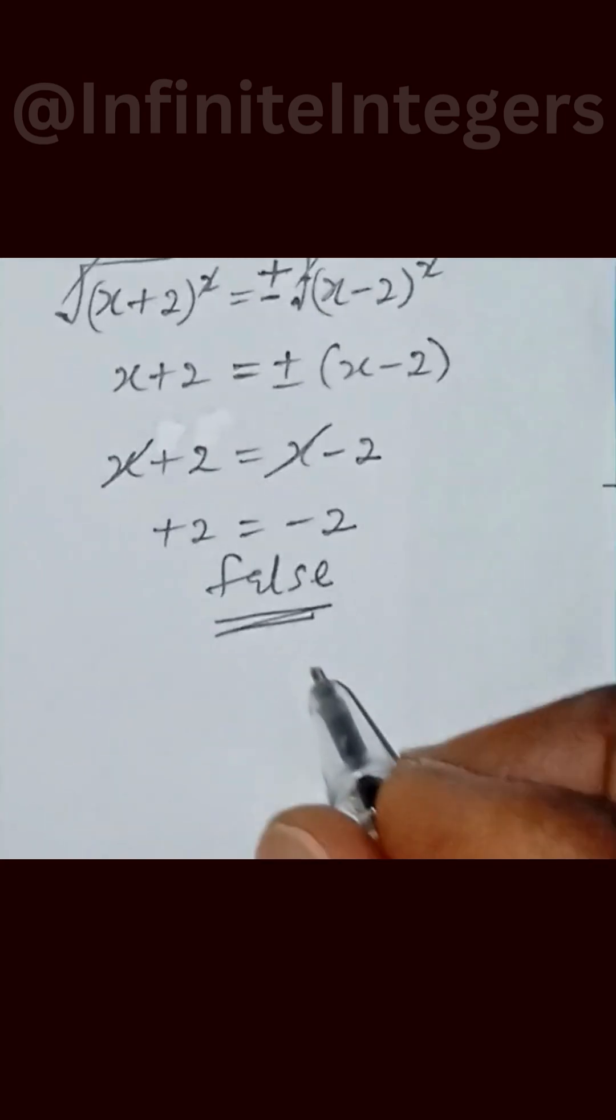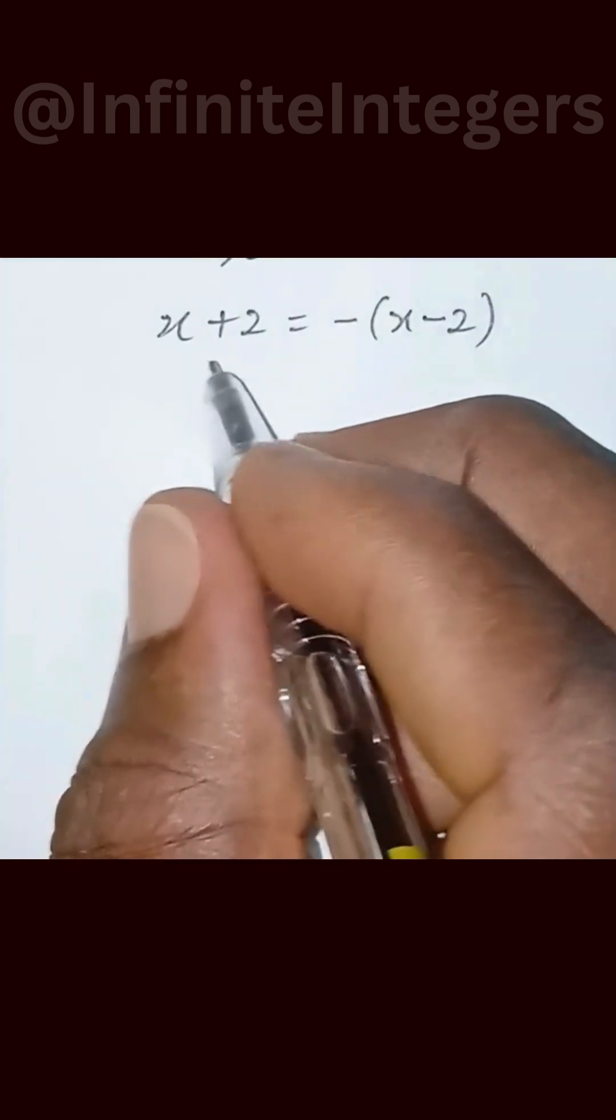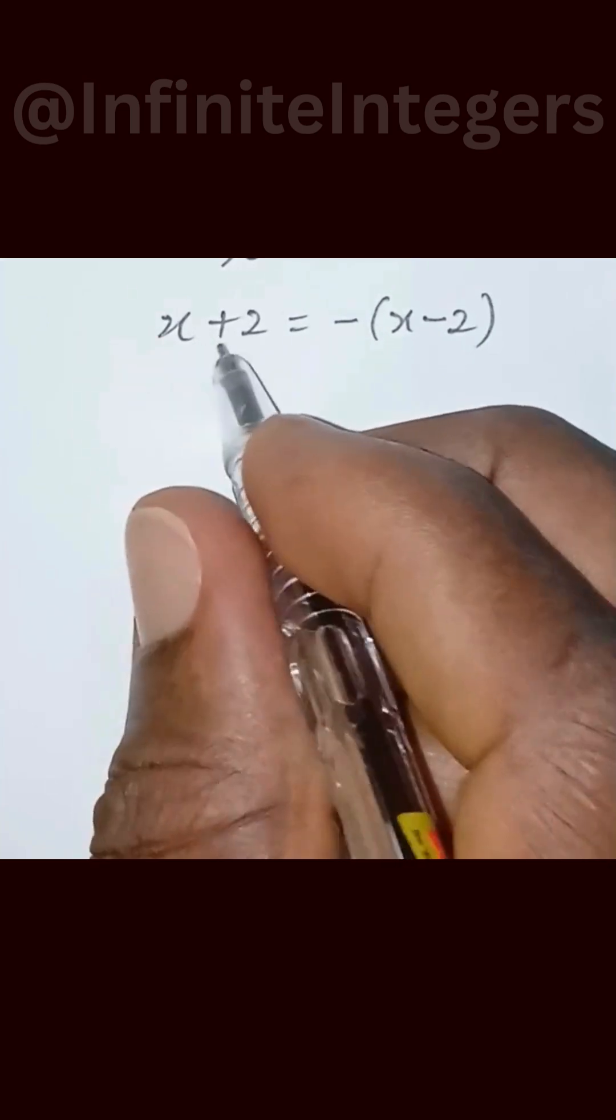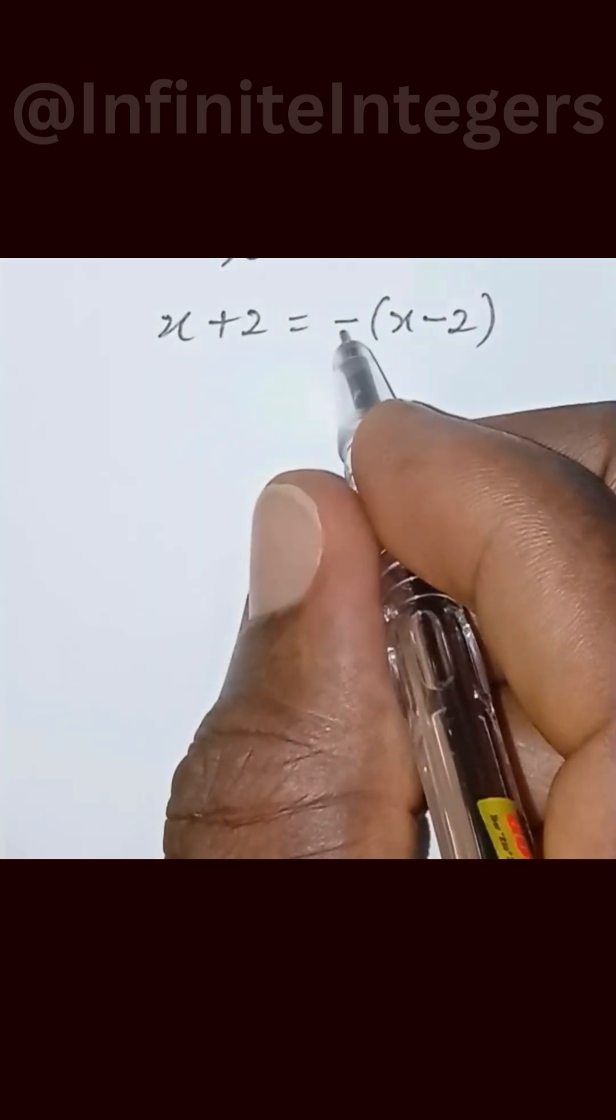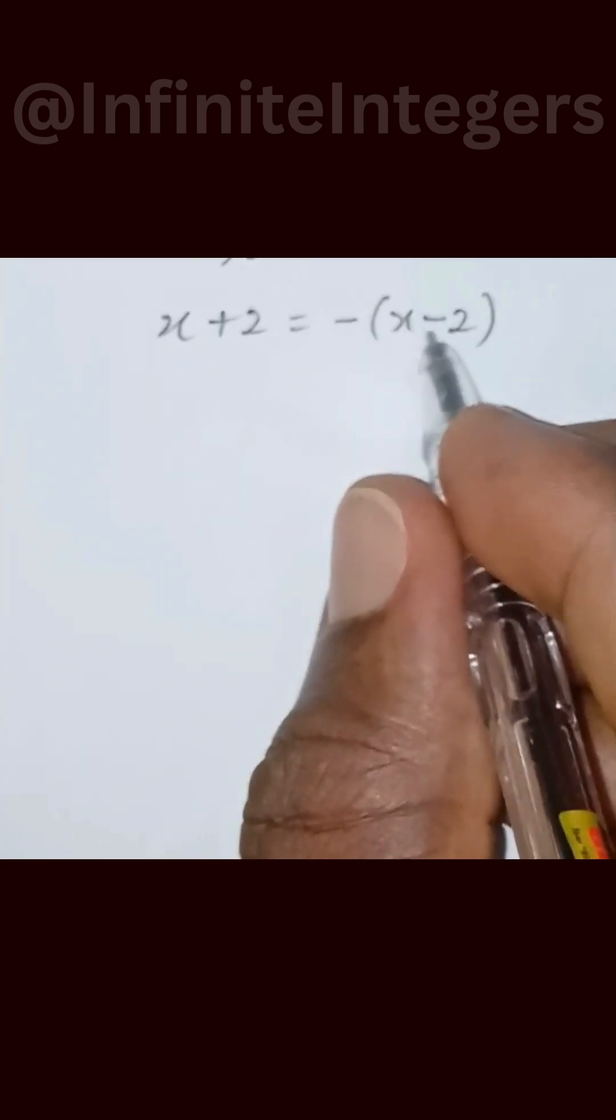So let's go the other route. So for the other value of x, we have x plus 2 equal to minus into bracket x minus 2.